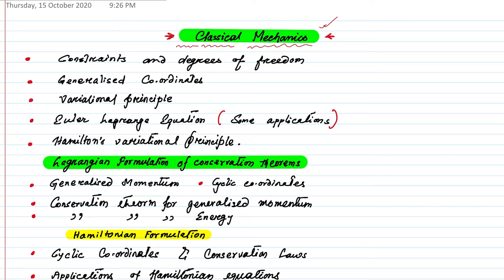What are the topics - first we are going to discuss about constraints, degrees of freedom, generalized coordinates, variational principle, Euler-Lagrange equation and some applications. We are going to solve some problems also and Hamilton's variational principle.